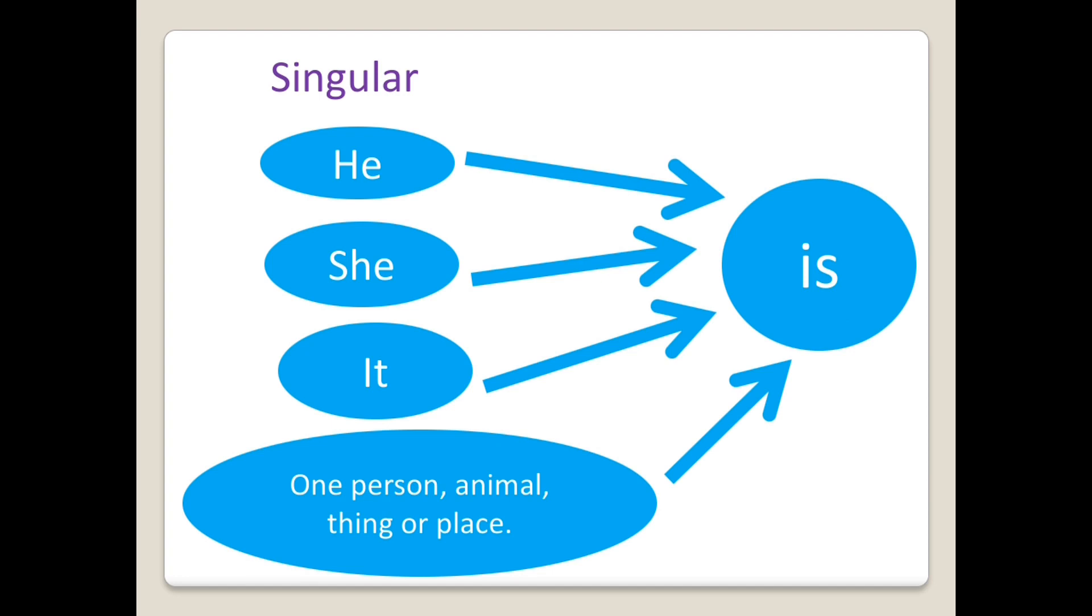Singular noun means one person, animal, thing, or place. If there is one person, or one object, or one animal, or one place, we use is, not are.